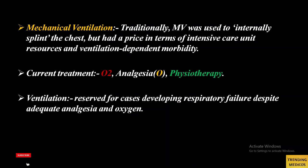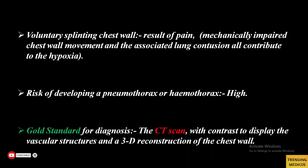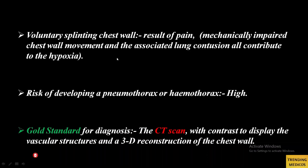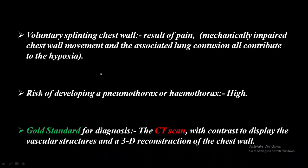Voluntary splinting of the chest wall occurs in flail chest due to pain, resulting in mechanically impaired chest wall movement. Associated lung contusion contributes to hypoxia, and the risk of developing pneumothorax or hemothorax is very high.